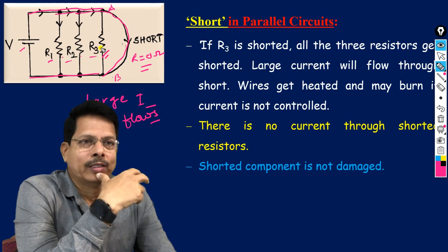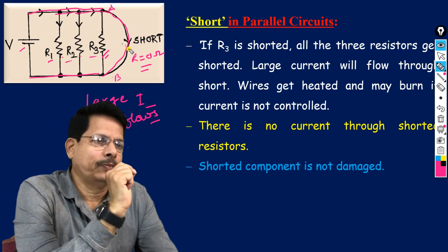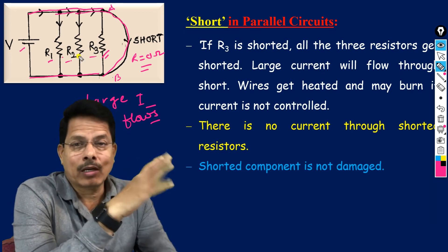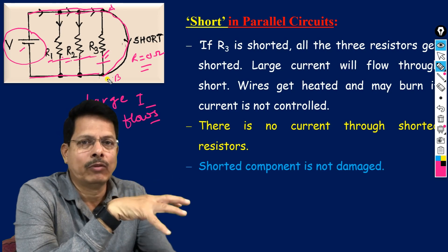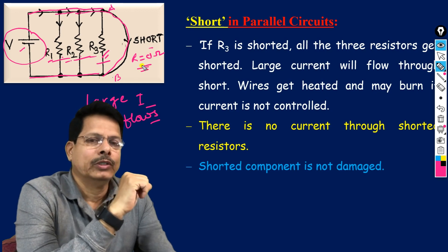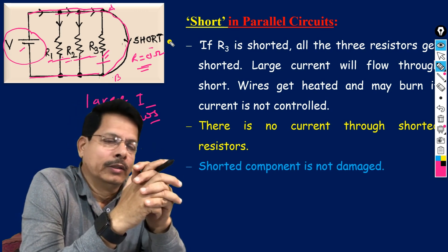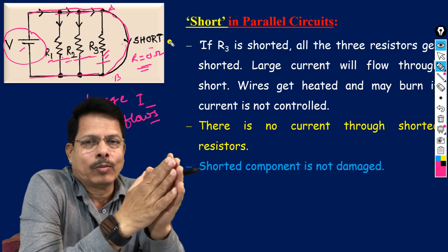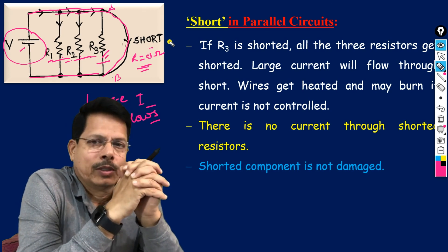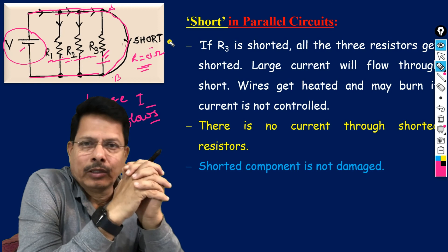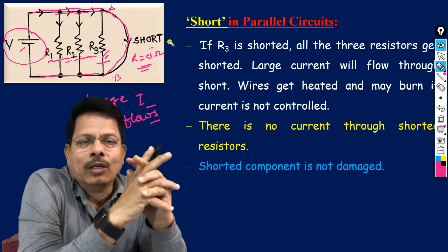If this large current is not controlled, the wires will get heated and burn. So in a parallel circuit it is very important that no component gets shorted. The shorted components themselves are safe, but you are shorting the power supply, so large current and large power will be drawn and wires will burn. This concludes all the points from Unit 1 on basic circuit analysis. If you have any confusion, ask me. See you next time — love you all, bye.